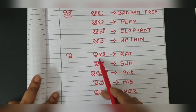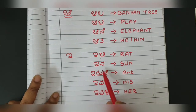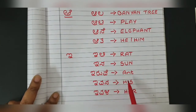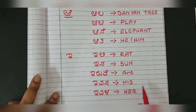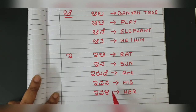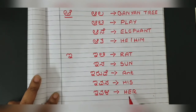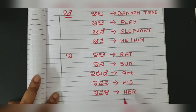And from I: ili means rat, ina means sun, iruwe means ant, ivana means his, ivala means her. For example, 'ivana batte' means his clothes, 'ivala bag' means her bag, 'ivala pen' means her pen, 'ivana pen' means his pen.